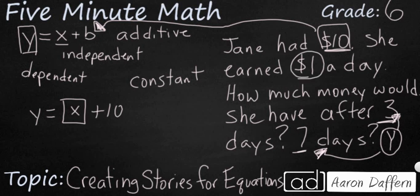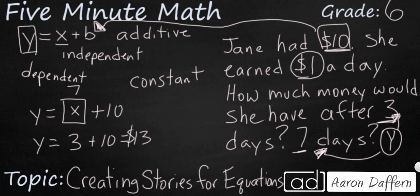So we can plug these in: y equals — after three days — three dollars, because it's a dollar a day, plus ten, and that's going to make thirteen dollars after three days. Or if we look at the second question, seven dollars for a dollar a day, plus the ten she started with, and that's going to be seventeen dollars. So those are some examples of a word problem that works with this additive type of equation.